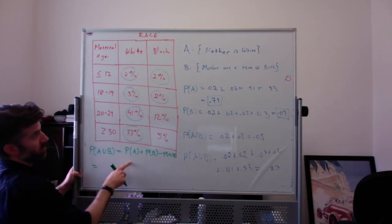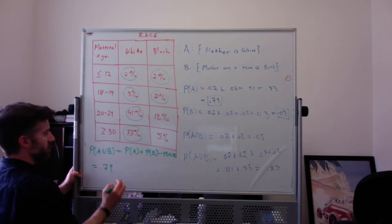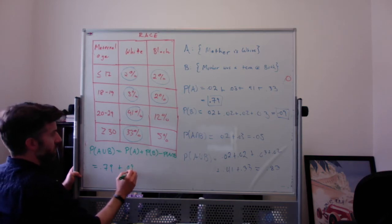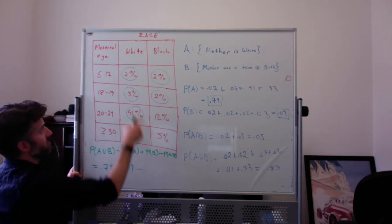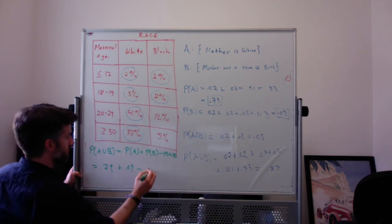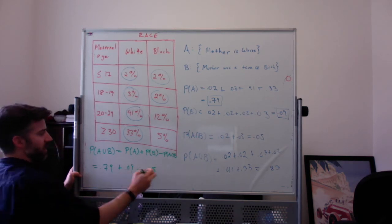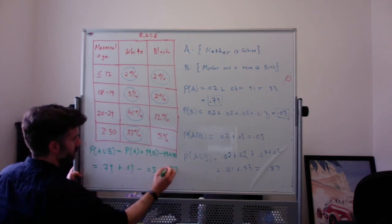And that's going to be the probability of A, 0.79, plus the probability of B, which is 0.09, minus the probability of A intersect B, which is 0.05. And that's exactly 88 minus 5, which is 0.83. Same thing.